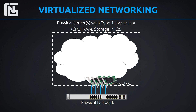In this example, think of a physical server represented by this white dotted line. This physical server has 4 network interface cards installed in it, and those 4 NICs are plugged into our physical network. It's got CPU, RAM, storage, and those 4 network interface cards.